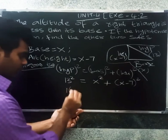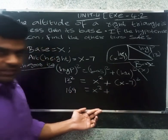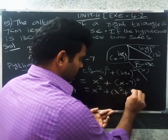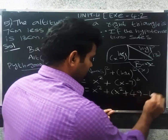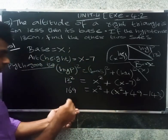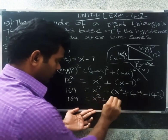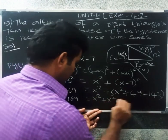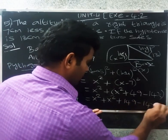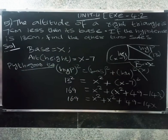So 13 squared, 169, equals x squared plus (x minus 7) whole squared. Expanding using (a minus b) whole squared equals a squared plus b squared minus 2ab: 169 equals x squared plus x squared plus 49 minus 14x.